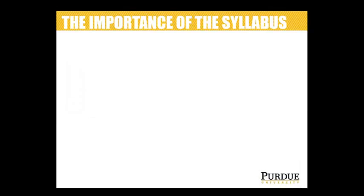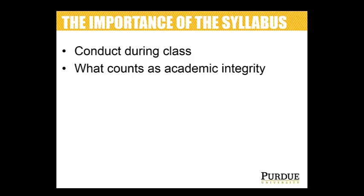One way to prevent academic dishonesty is by addressing it in the syllabus. Things that might relate to this involve conduct during class — things like not looking on somebody else's paper, or spacing students out so they're less likely to look off of each other or collaborate in some unauthorized way. What counts as academic integrity? Having an explanation in your syllabus that's specific to your class and recognizes the common temptations or problems is a good idea.